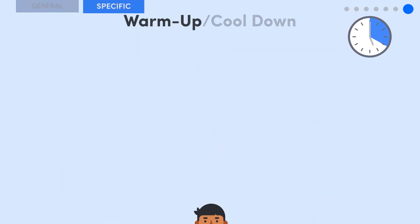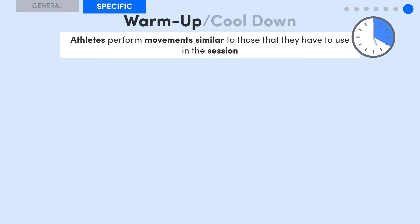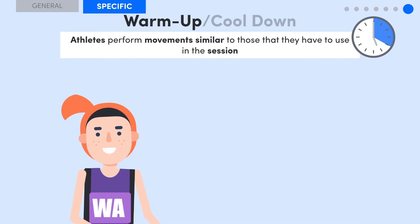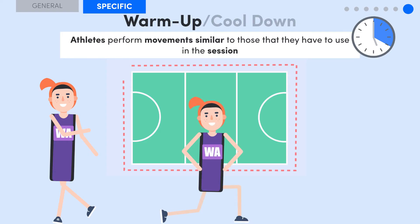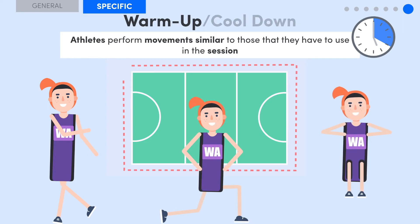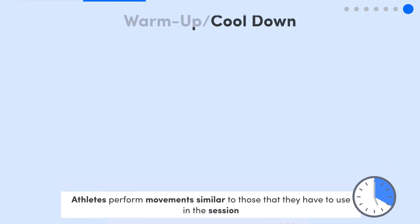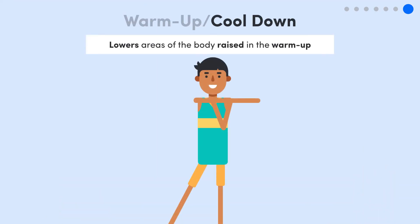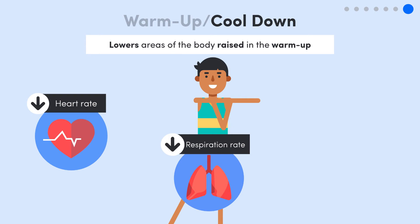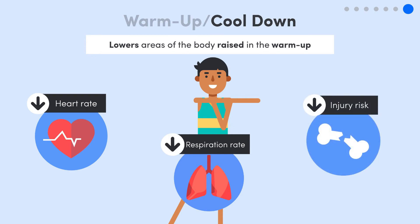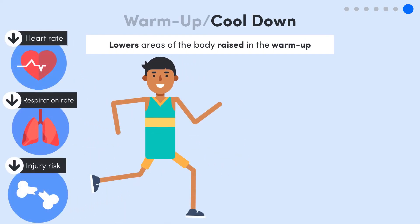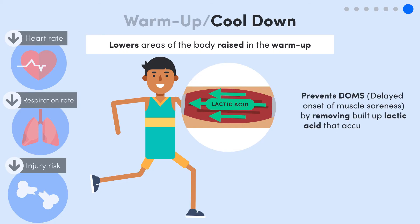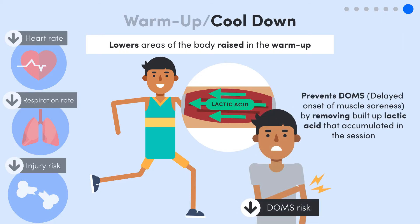Then we have specific warm-up, where athletes perform movements that are super similar to those they have to do in the session. For example, a netballer could do some grapevines, lunges, and tuck jumps to get the mind thinking about those movements from the get-go. The cool-down simply lowers all of the things raised in the warm-up — the heart rate, respiration rate, etc. — and is super important to prevent injury and prepare the athlete for the next session. It also prevents DOMS (delayed onset of muscle soreness) by removing built-up lactic acid that accumulated during the training session.